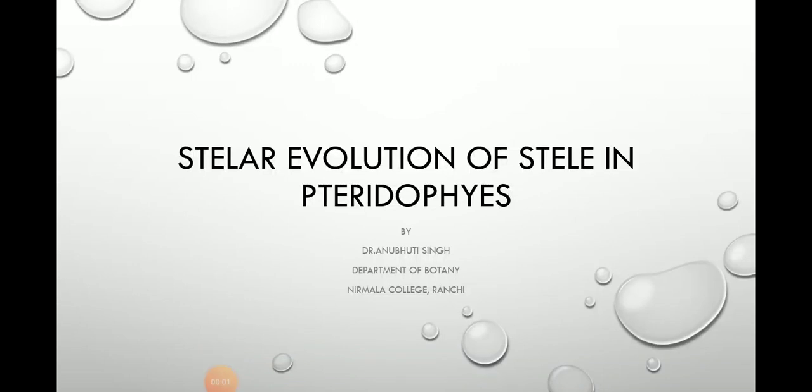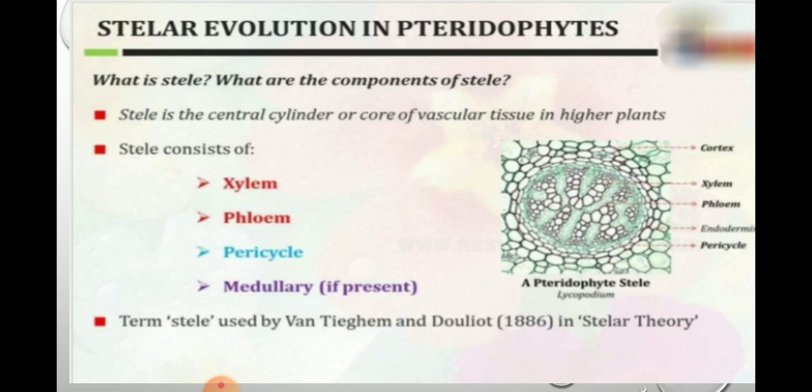Good morning students. Today we study the topic Stelar Evolution in Pteridophytes. Before starting the chapter on Stelar Evolution, first we have to know what is a Stele. The name Stele has been derived from a Greek word meaning pillar. The Stele is defined as a central vascular cylinder with or without pith, delimited from the cortex by the endodermis.